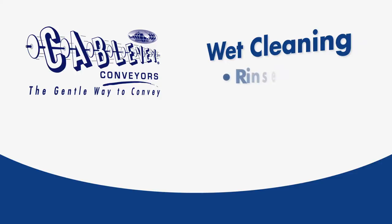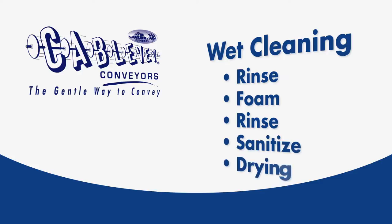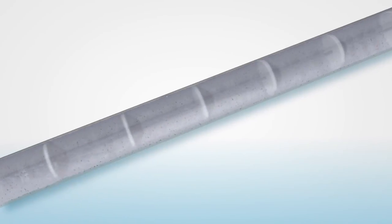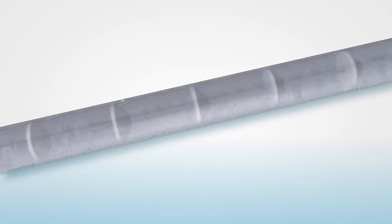Cleaning our system in place is a multi-step process made easy with our tubular cable conveyors. After material is passed out of the system, water can be introduced to rinse the inside of the tubes, disc and cable.